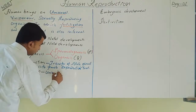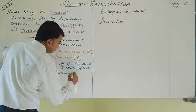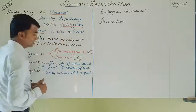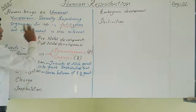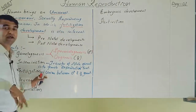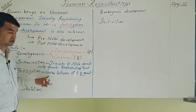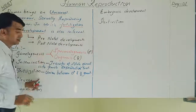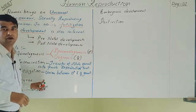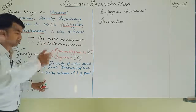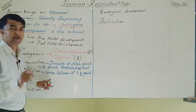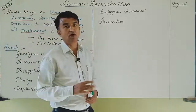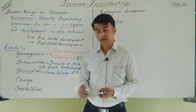Fertilization is the actual union between the male and female gametes. Fertilization is internal — it takes place inside the female reproductive tract, specifically in the fallopian tube. From fertilization onwards, every subsequent event occurs in the female reproductive system.